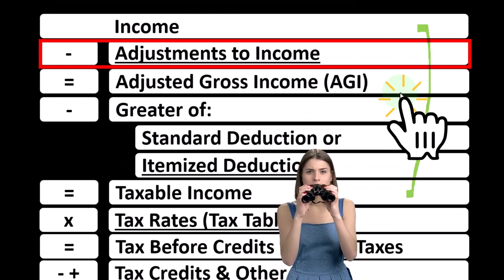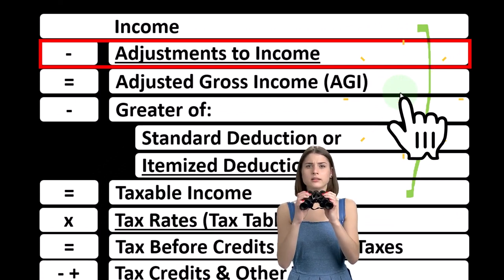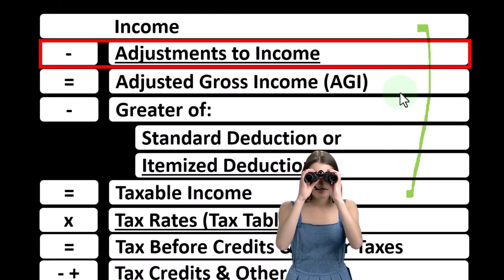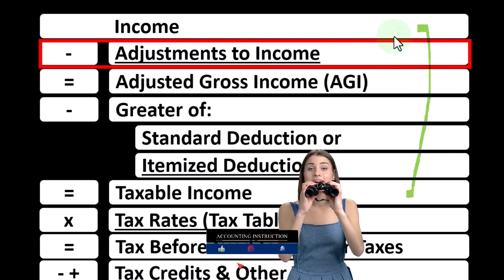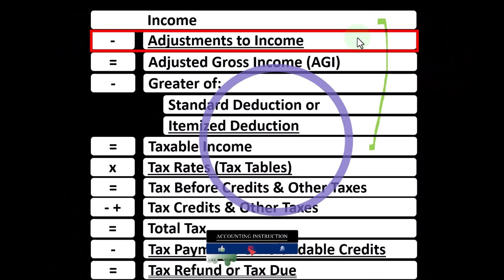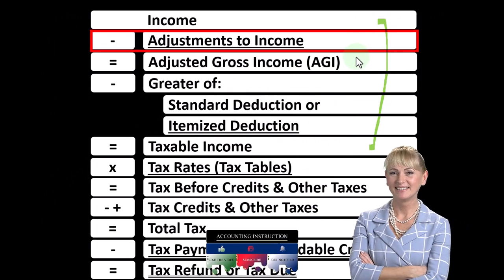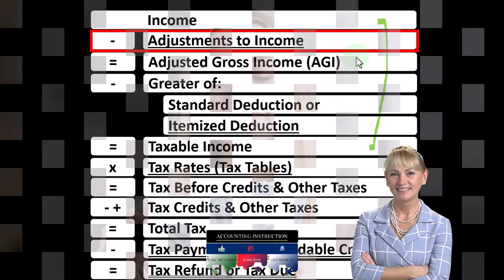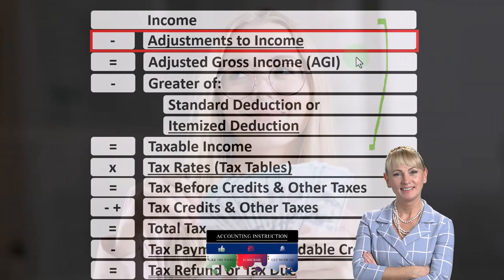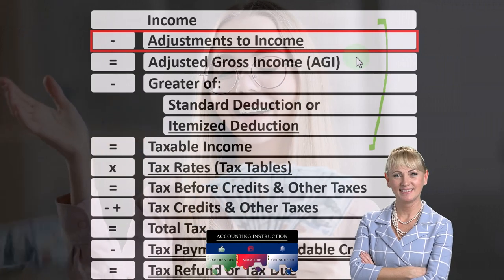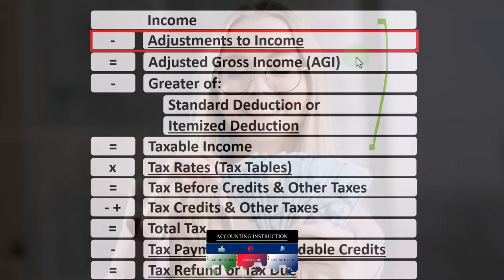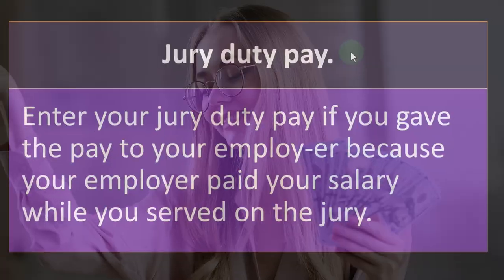That's why you can think of it as kind of like a contra income account, but it's a deduction. You've included the Jury Duty pay in income and then reduced it back out with the adjustments to income. So there's no net impact from the Jury Duty pay when you get to the subtotal of the adjusted gross income. That's the general idea.